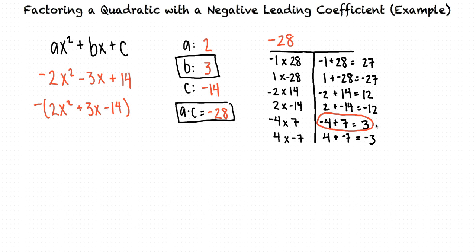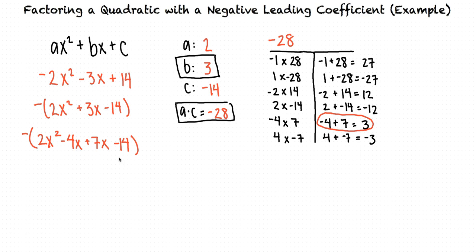Using these two numbers, we'll further manipulate our quadratic by expanding out a little bit. We can rewrite 2x squared plus 3x minus 14 as 2x squared minus 4x plus 7x minus 14, getting the negative 4 and the 7 from the pair we determined. This quadratic expression is equivalent because negative 4x plus 7x is the same as 3x.